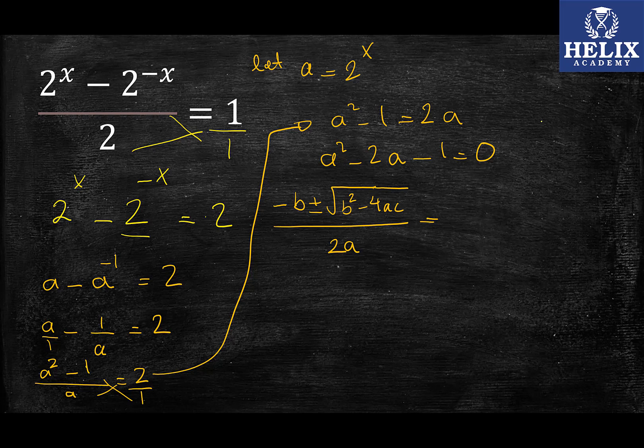Okay, so in this case, what is my a? a is 1, b is negative 2, and c is negative 1. So I'm just going to substitute everything in.